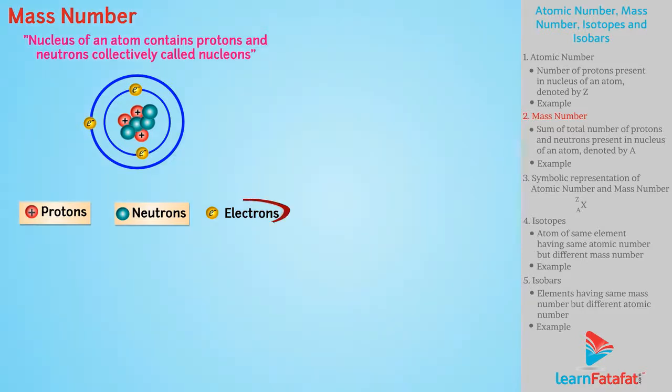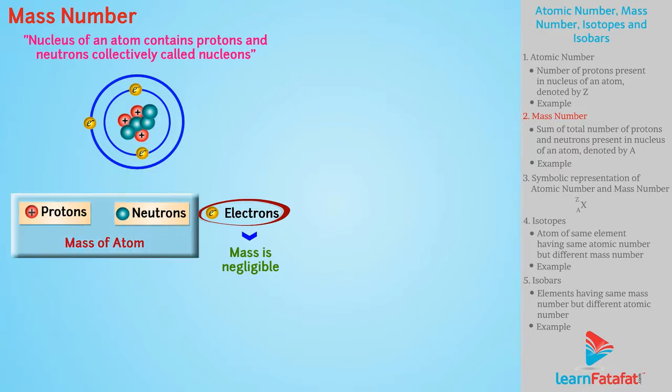As mass of electron is negligible, the mass of atom depends on masses of protons and neutrons. So, mass number is defined as sum of total number of protons and neutrons present in nucleus of an atom and is denoted by capital A.